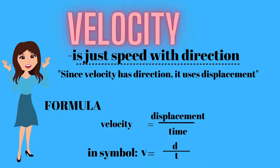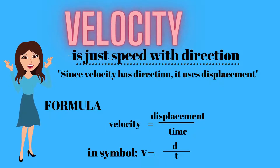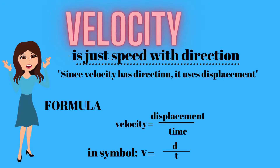Let's proceed with velocity. Velocity is just speed with direction. Since velocity has direction, it uses displacement. The formula is velocity equals displacement divided by time — in symbol, V equals displacement (d) divided by time (t).